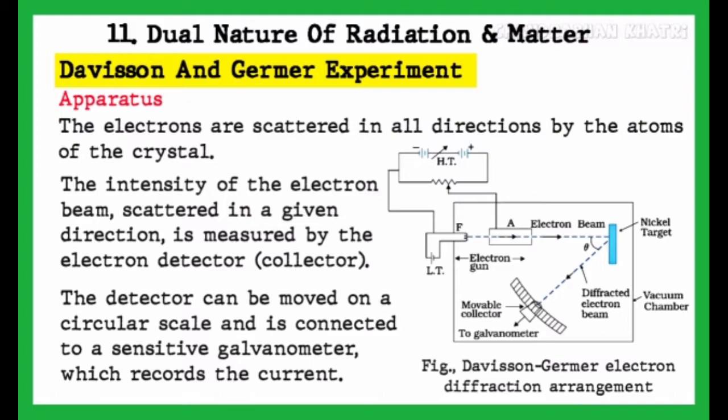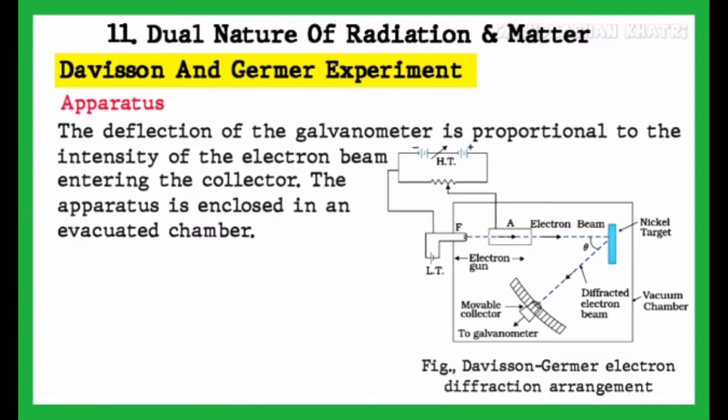The detector can be moved on a circular scale and is connected to a sensitive galvanometer which records the current. The deflection of the galvanometer is proportional to the intensity of the electron beam entering the collector. The apparatus is enclosed in an evacuated chamber.